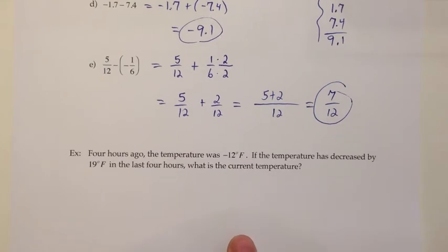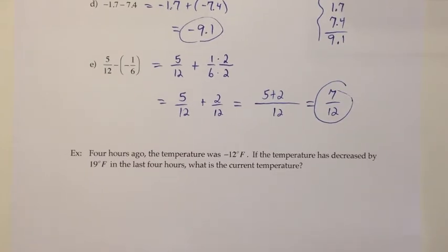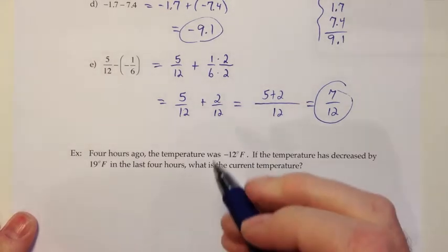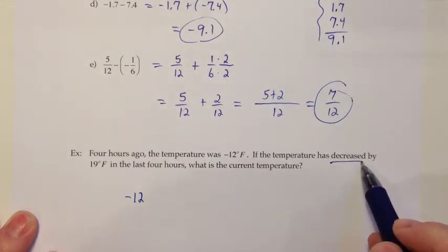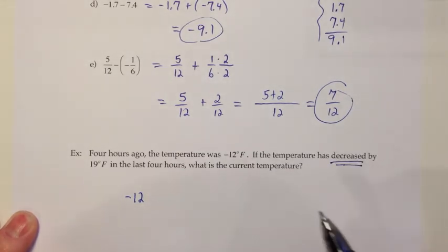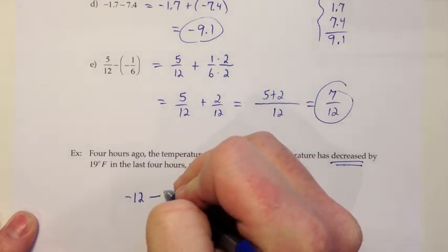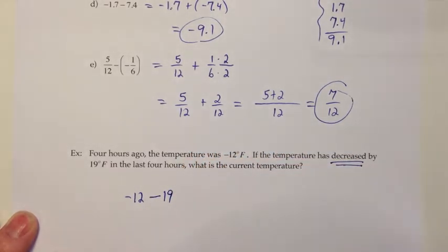Alright, let's finish off this page with an application. It says 4 hours ago the temperature was negative 12 degrees Fahrenheit, something we don't have to deal with in California too often. If the temperature has decreased by 19 degrees Fahrenheit in the last 4 hours, what is the current temperature? So you can almost think of this like a number line, which a thermometer kind of is, right? It's just a vertical one. On that thermometer we were at negative 12, and then the temperature has decreased by 19. So when I hear decrease by 19, I think that sounds like a subtraction. It has gone down by, or we have subtracted 19 from what the temperature used to be.